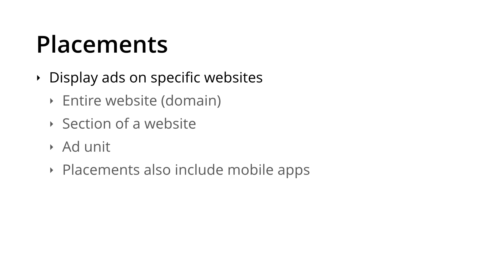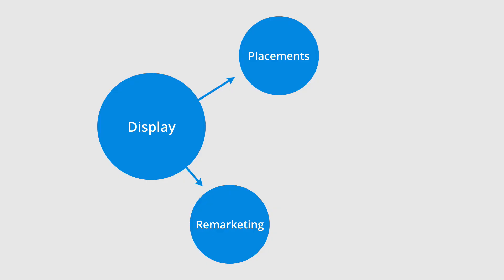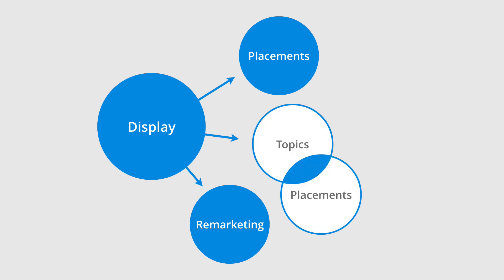The way we structure our display campaigns is different than how we structure our search campaigns. For our display campaigns, we set the targeting for each ad group. In this example, we have a display campaign that contains two ad groups — one that uses placement targeting and another using remarketing. So the ad groups determine where our ads are displayed. You also have the option of combining targeting methods in a single ad group. Here we can see we're combining a topic target with a placement target, which means we're more specific about where we want our ads to be displayed. For example, we could target the topic of healthy eating and the placement of the New York Times, which means our ads would only display on content relating to healthy eating on the New York Times.